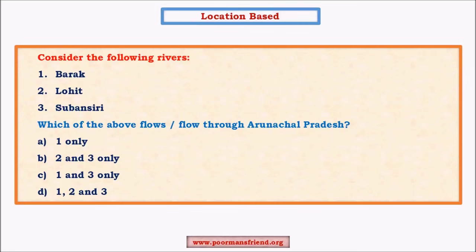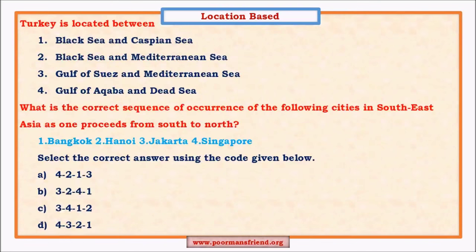For example, a location-based question like 'Which rivers flow through Arunachal Pradesh?' depends on your map skills. When studying geography, always have an atlas or Google Maps to locate things during preparation. For international perspective questions — like Turkey being located between the Black Sea and Caspian Sea — the Middle East is a very hot region, constantly in the news. You need geographical understanding of countries like Israel and Iraq, surrounding seas, and rivers in those regions.